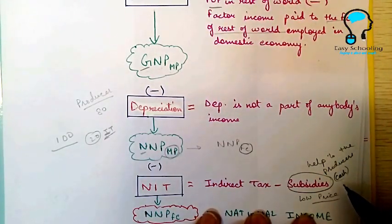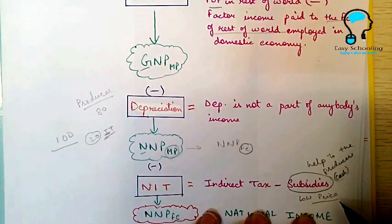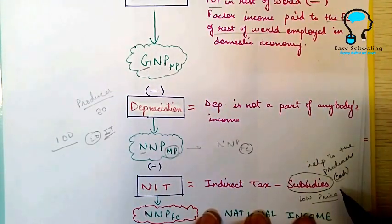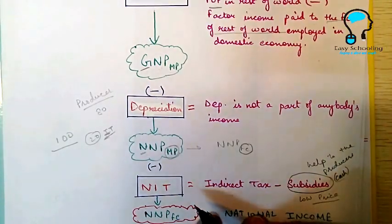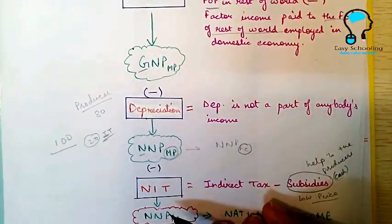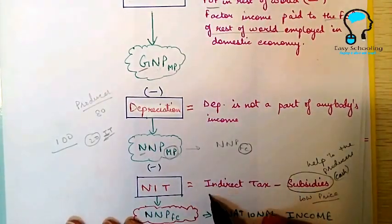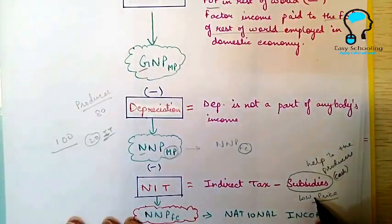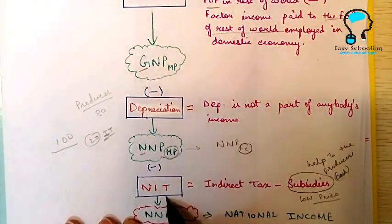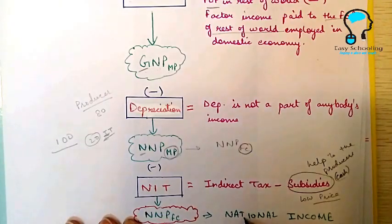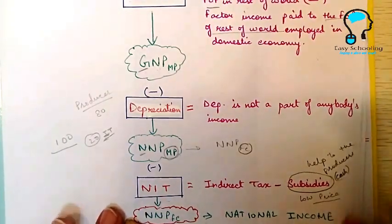And when the producers are getting that subsidy they will keep the price of the commodity low, and when price of the commodity will be low the consumers will also be benefited by it. So when we are changing from market price to factor cost, we need to deduct net indirect taxes, that is indirect tax minus if any subsidies are paid. And when you deduct net indirect taxes from market price you get NNPFC, that is your national income.